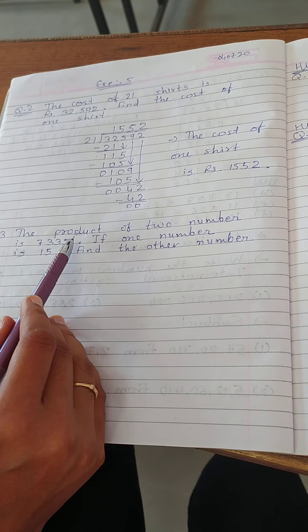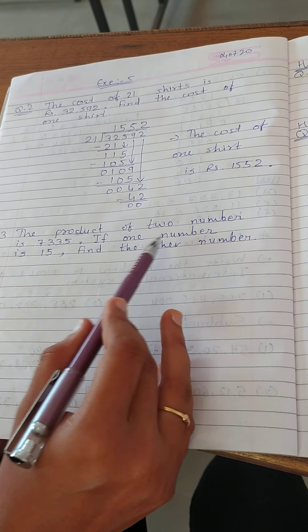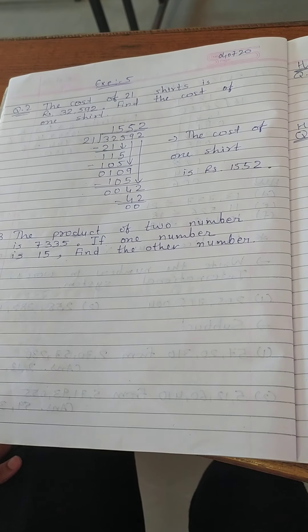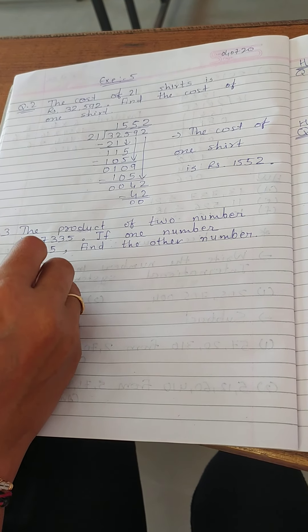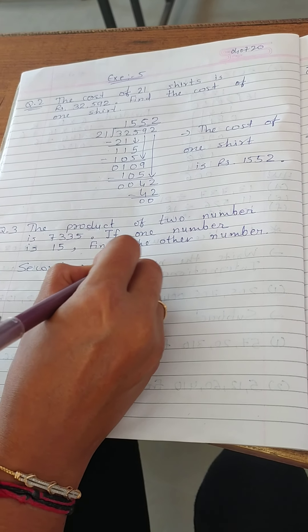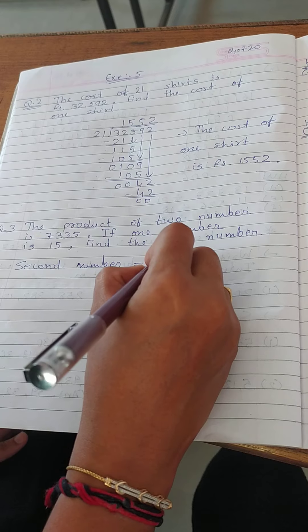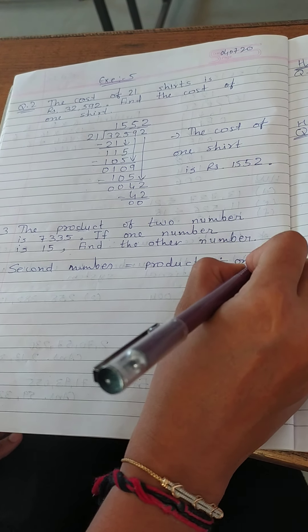Product means answer of multiplication. Now, answer is given here. Now, 1 number is also given here. So we want to find the second number. So second number equals product divided by 1 number.